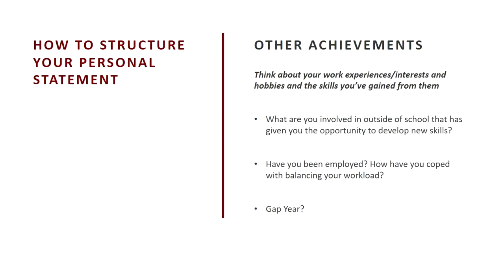Moving on to achievements: talk about work experience. I appreciate those applying for 2021 may have had difficulties with work experience owing to coronavirus cancellations. If you had work experience arranged previously, you could mention it was cancelled. You could also talk about work done in community groups, volunteering within a school environment — anything that links to what you're applying for at university. Part-time employment is valuable too, particularly if you can demonstrate transferable skills such as communication, problem solving, and conflict resolution.